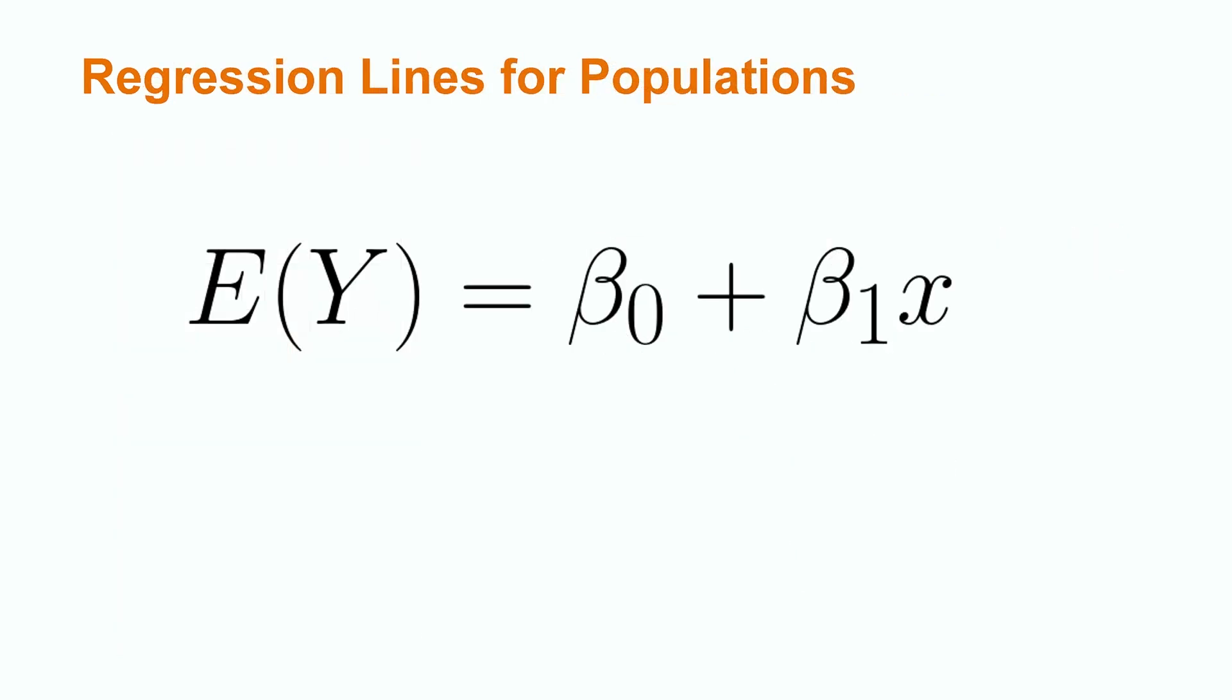Let's say that we want to use all our patients to create a regression model to analyze the relationship between exercise and mental health. This would mean that we are using our entire population, so we must use the equation for the regression line of a population.